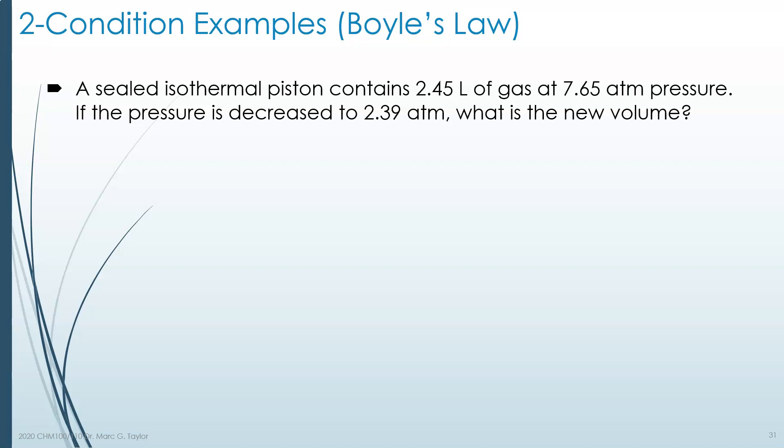A sealed isothermal piston. You've already been told several things. Sealed: the N is constant. Isothermal: the temperature is constant. Piston: the other things can change. The volume and pressure can change. So let's make our table to solve our problem.